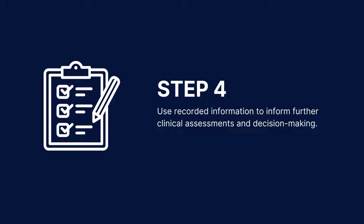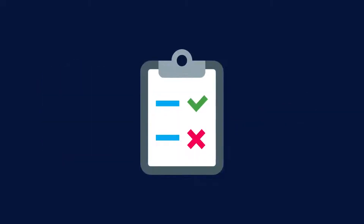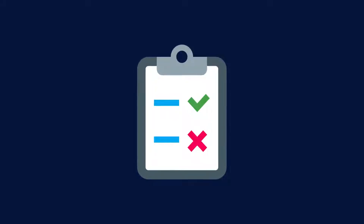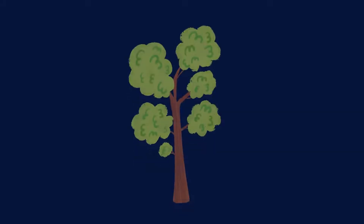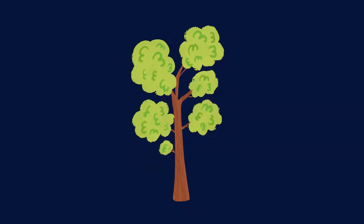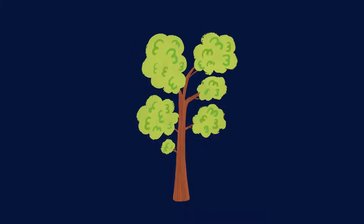For the scoring, the Romberg scoring is straightforward as the test is a pass or fail evaluation. A patient who maintains their balance without significant swaying or falling during the test is considered to have a negative Romberg test.